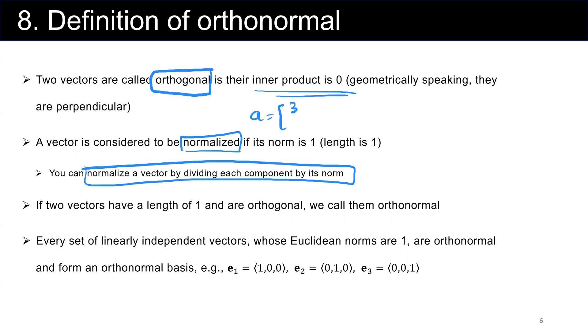Vector A is equal to [3, 4]. I want to normalize vector A. What I do first, I find the Euclidean norm of vector A, which is the square root of 3 squared plus 4 squared, the square root of 9 plus 16, the square root of 25, which is 5. Then the normalized version of vector A is A divided by the norm of A, which is [3/5, 4/5].